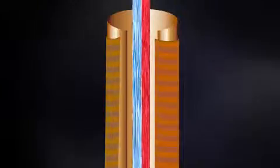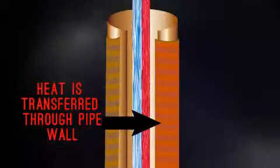By coiling another pipe around the drain pipe, some of the heat can be captured and used to preheat incoming water going to the shower and the hot water tank.